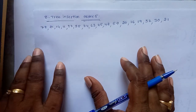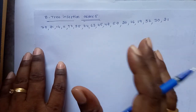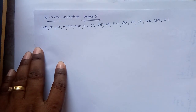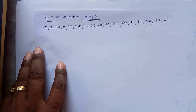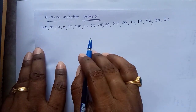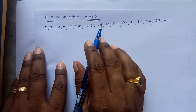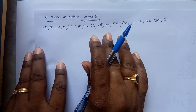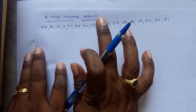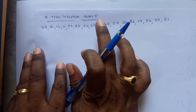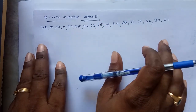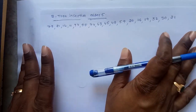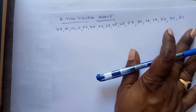Hi friends, welcome to our channel. In the previous sessions we had discussed B-tree insertion for order 3 and order 4. Now in this session we will discuss B-tree insertion of order 5. This is a very big example — observe each and every point.